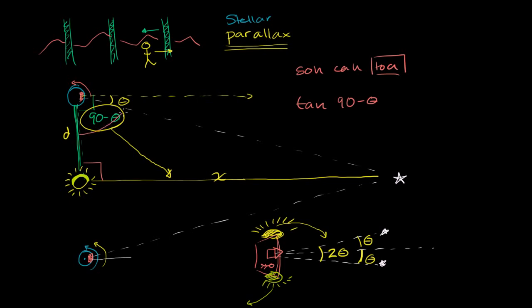Tangent of 90 minus theta, that angle right over there is equal to the opposite side, is equal to x over the adjacent side, over d. Or another way, if you assume that we know the distance to the sun, you multiply both sides times that distance. You get d times the tangent of 90 minus theta is equal to x. And you can figure out the distance from our solar system to that star.